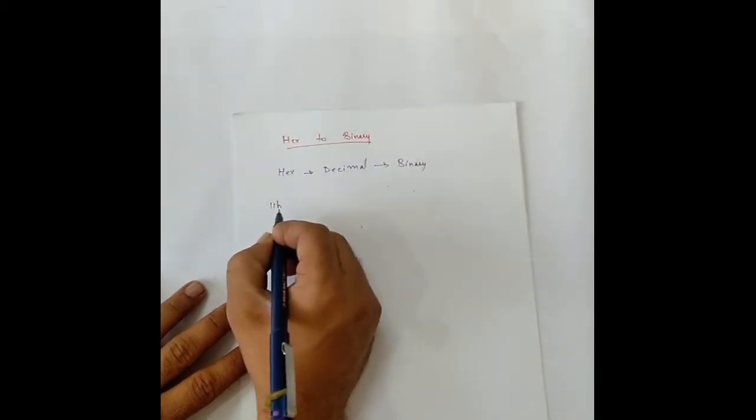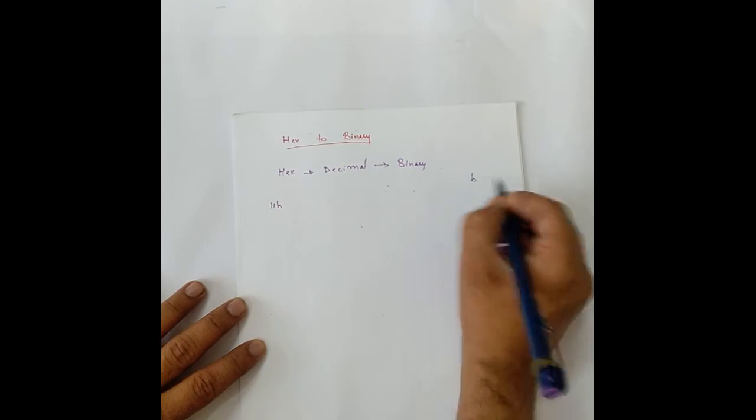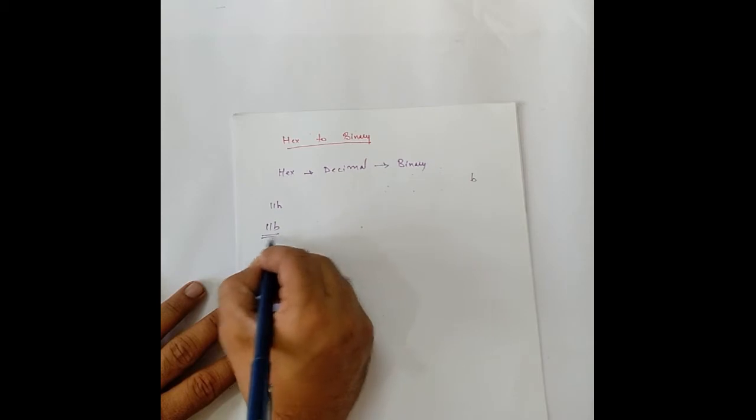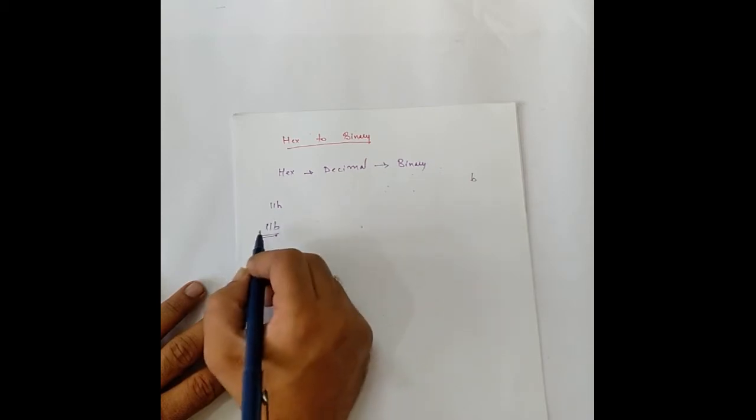For hexadecimal, we use the suffix h and for binary, we use the suffix b. So, if I write 11b, it means this is a binary representation, not decimal, not hexadecimal.